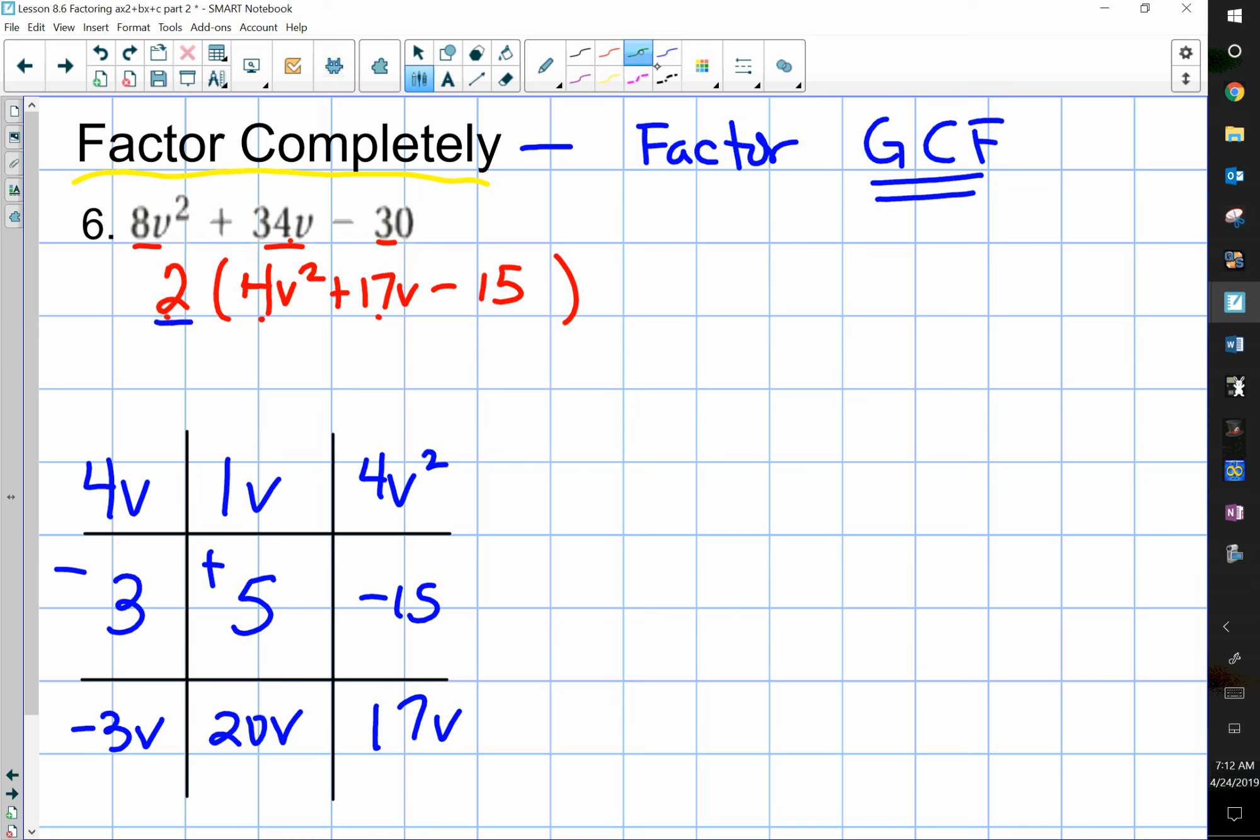So, to write out your answer, you take this column, 4v minus 3, and this column, v plus 5. That's the factored form of this trinomial, but you factored a 2 out in the beginning, so that has to go in your answer as well, right at the beginning.